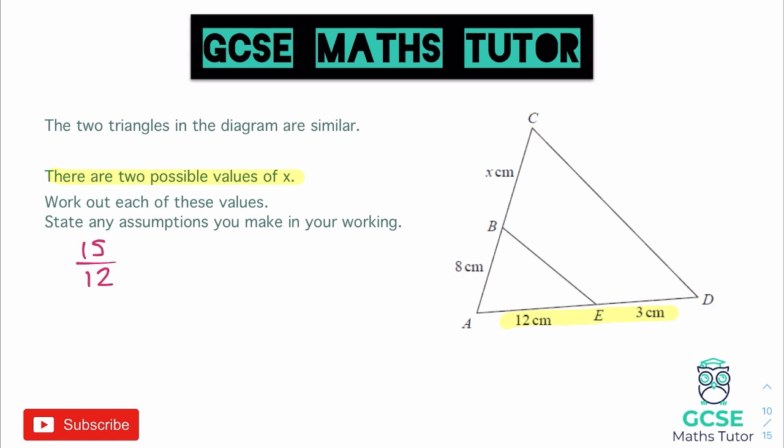So if that's our scale factor, to get from 8 up to the full length of the line here, we're going to multiply by the scale factor. So we're going to multiply that by 8. And when we do that, obviously we're doing this on a calculator, so 15 over 12 multiplied by 8 gives us a total length of 10. So if the total length of the triangle is 10, and the smaller triangle has a length of 8, then the value of x must be 2 centimeters.